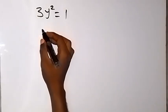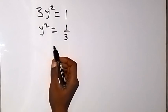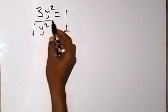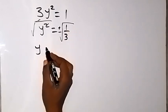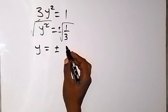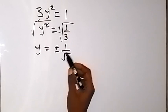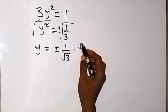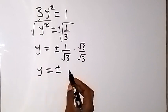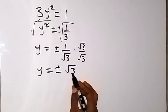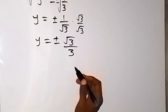From here, we divide both sides by 3, giving us y squared equals to 1 over 3. Since we are finding y, let's take the square root on both sides. The square root cancels on the left, and on the right we have plus or minus, such that y equals to plus or minus square root of 1 over 3. Square root of 1 is 1 and square root of 3 is root 3. We can rationalize the denominator by multiplying by root 3 over root 3, which gives us y equals to plus or minus root 3 over 3.